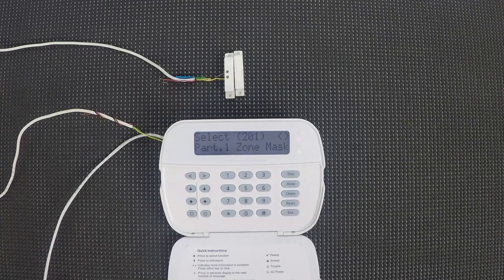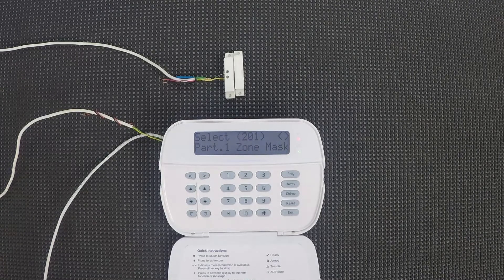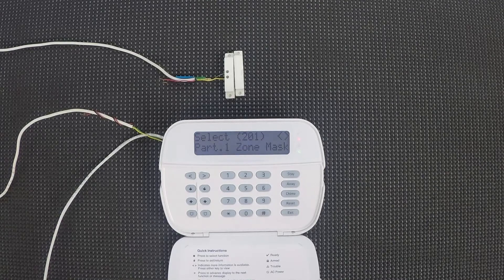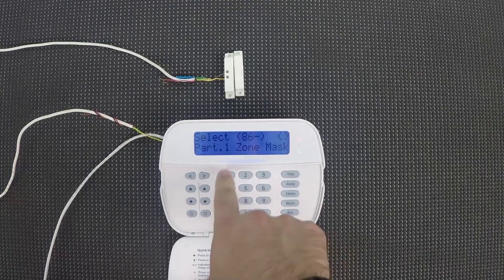So it starts out on section 861 for keypad one. Keypad two would be 862, keypad three 863, et cetera. So I'm going to go to 861 since this is slot one.